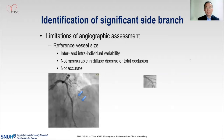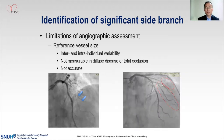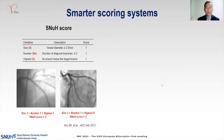It's not accurate. Here you're looking at diagonal branches which seem to have a similar size. However, if you see the territory, it's totally different. So it's not accurate, not reliable. That's the reason why we are trying to make smarter scoring systems in the cath lab.